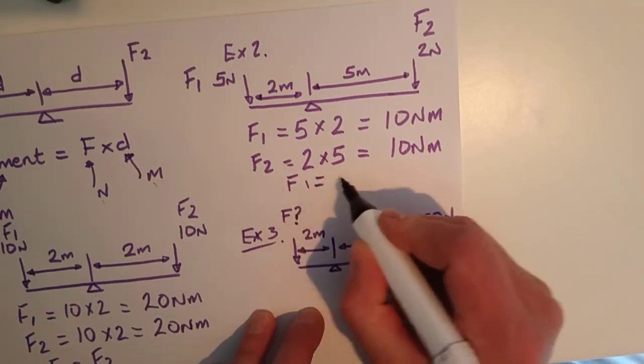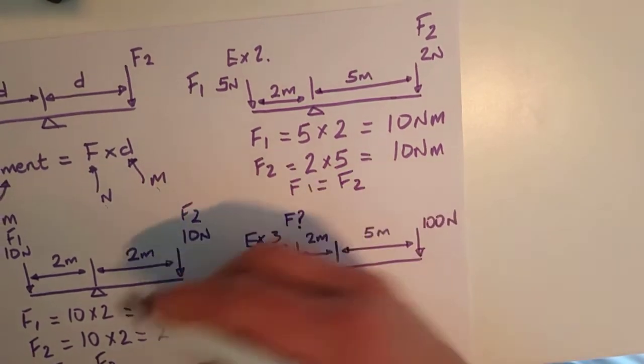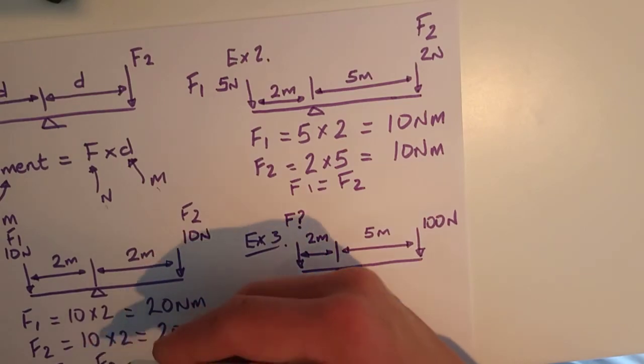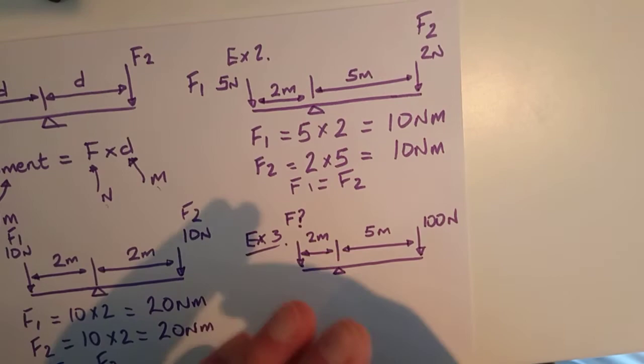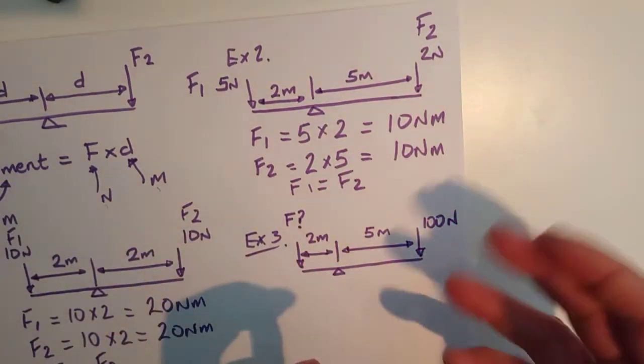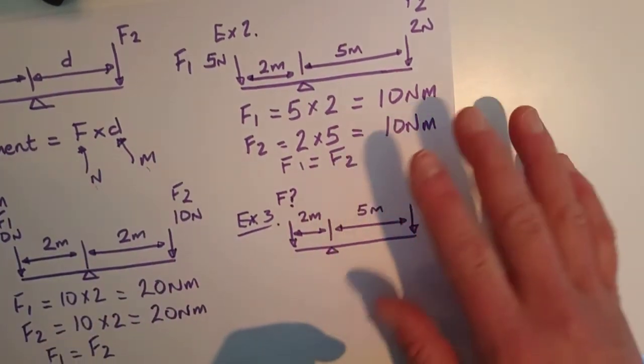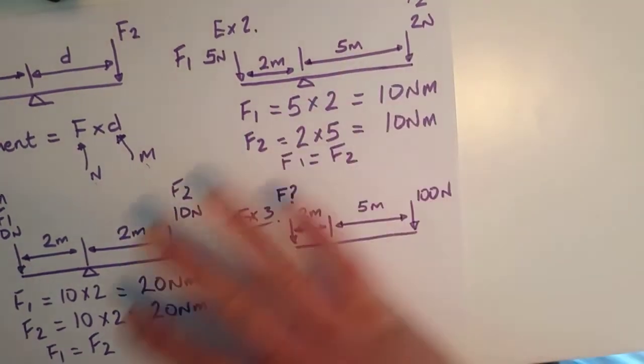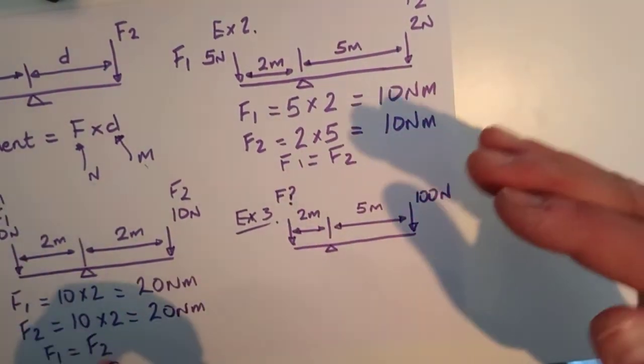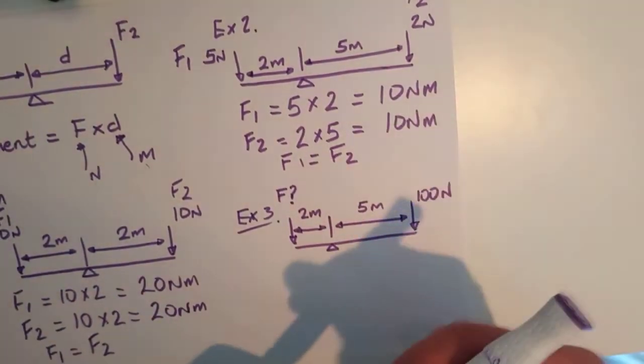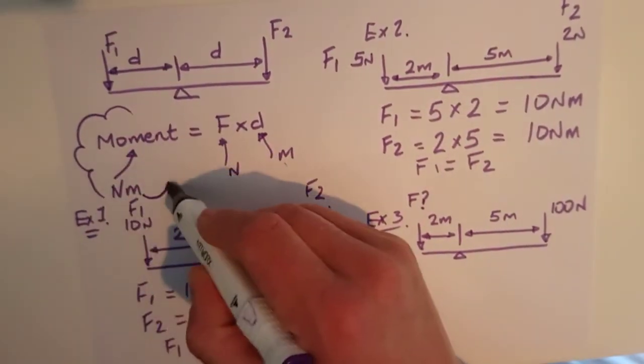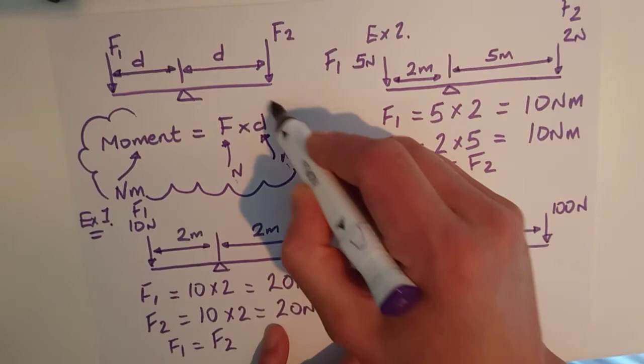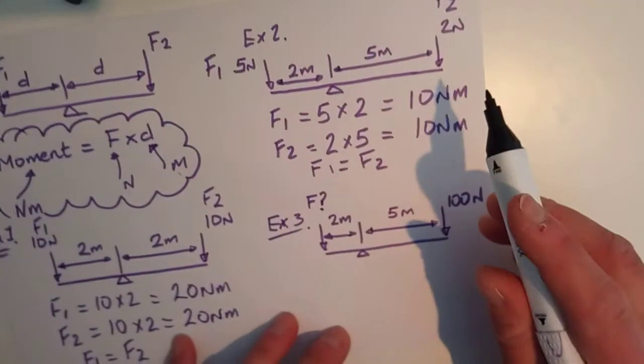We can write this as force one is equal to force two. And again, all the usual, the sum of the clockwise and anti-clockwise moments are equal to each other. So two ways of doing that, kind of working out whether things are balanced or unbalanced. It's good experience of getting these, using this moments formula or calculation or equation. So it's a good way of using that.